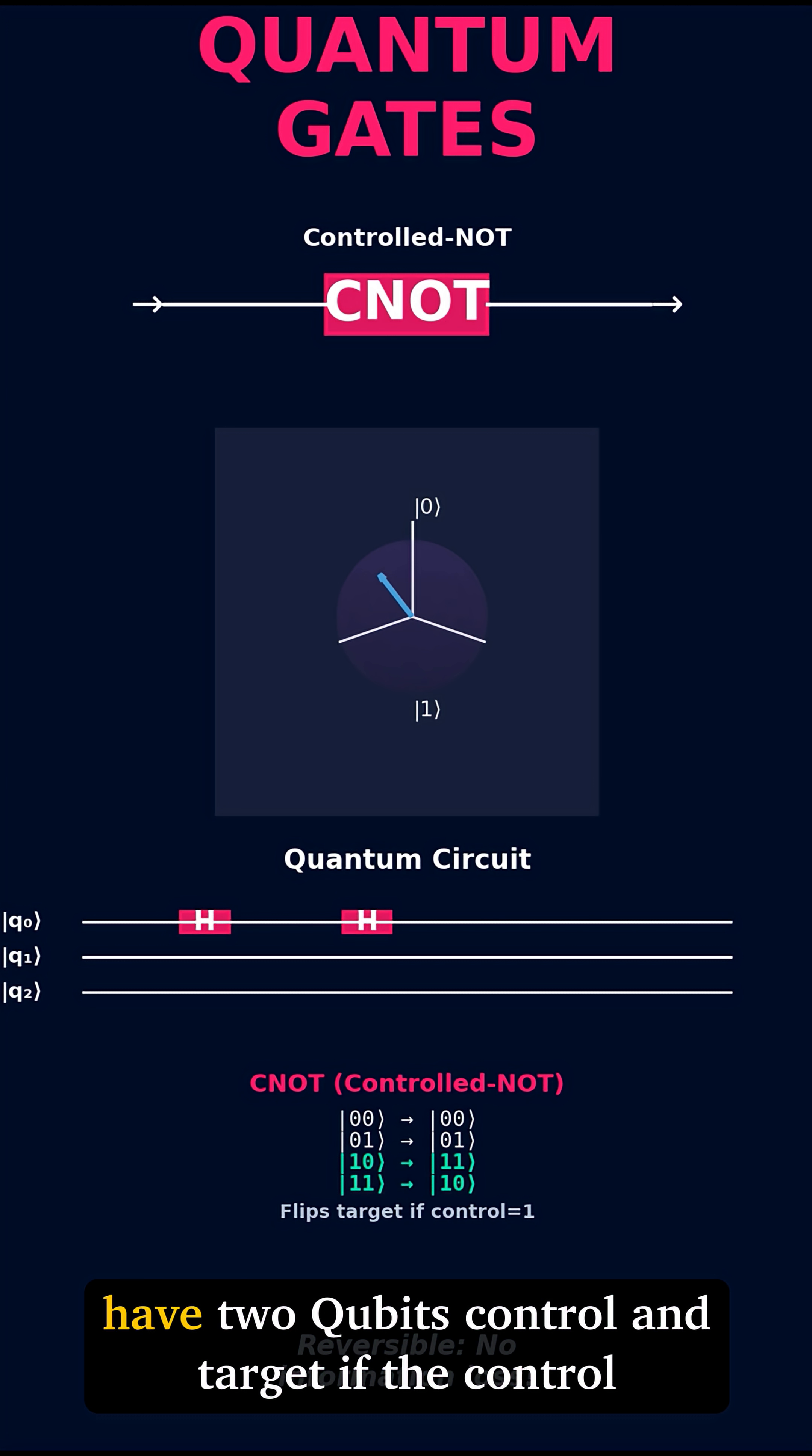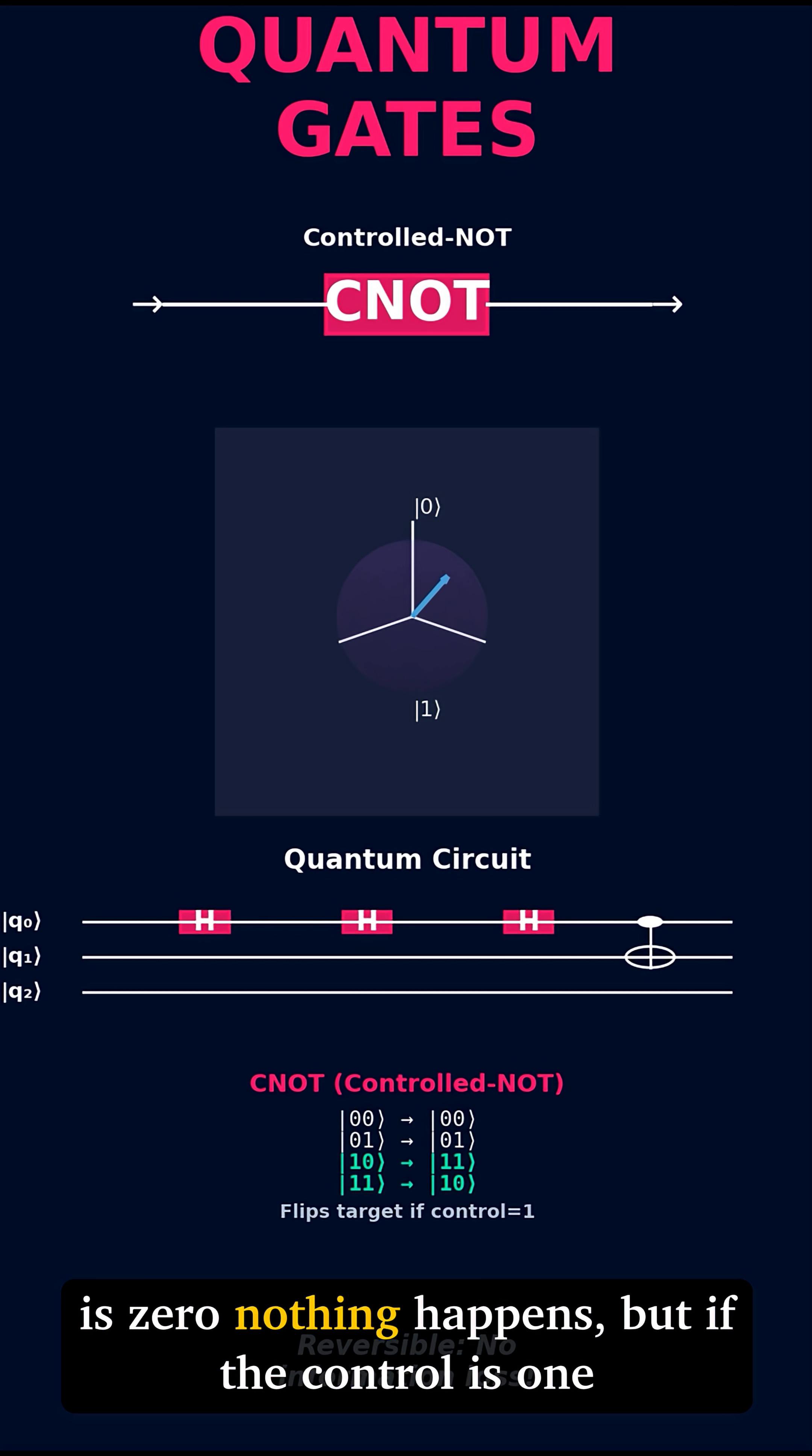Here's how it works. You have two qubits, control and target. If the control is 0, nothing happens. But if the control is 1, flip the target. CNOT creates entanglement.